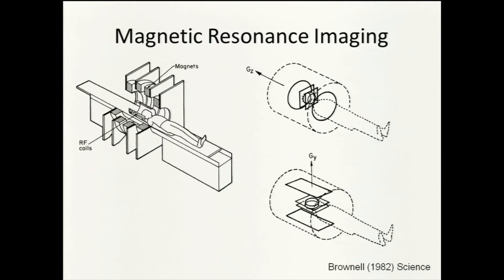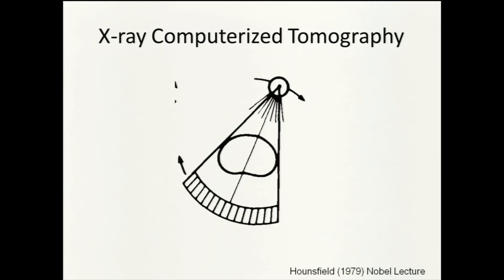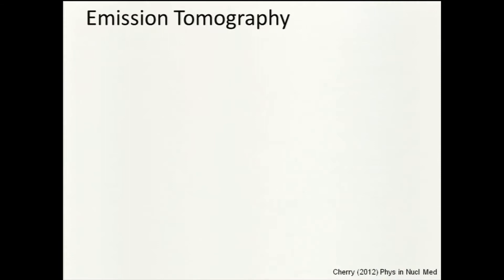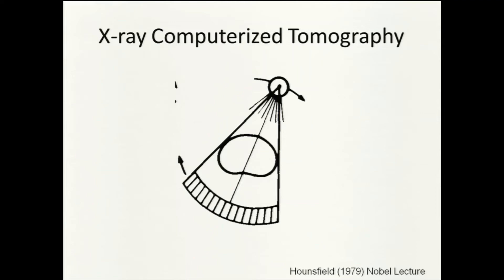That was MRI. Now x-ray computerized tomography, CT. In this case we have an x-ray source outside of the subject — our abstract rat in cross-section. The x-ray source rotates around the rat, and opposite it are x-ray detectors. Radiation from the source passes through the subject and reaches the detectors on the other side. By measuring absorption along all possible lines of response, we get enough data to use reconstruction algorithms to work backwards and determine the density of the material in the subject.